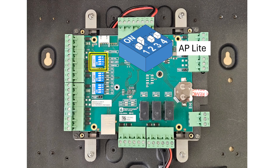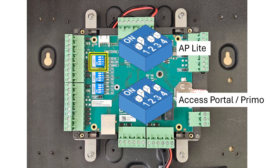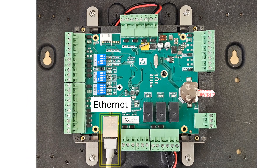If you're working on a larger site using Axis Portal or Primo, set the mode switches to 0110. Plug the Ethernet cable into the socket on the RTRT2 and route it to a suitable Ethernet switch, with the cable length no longer than 100m.